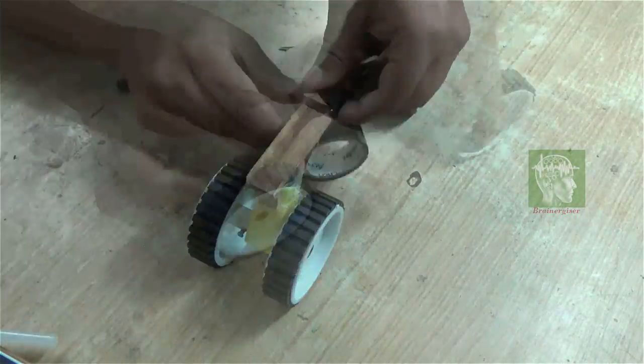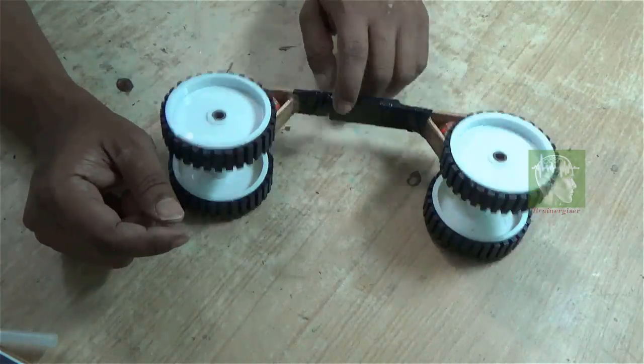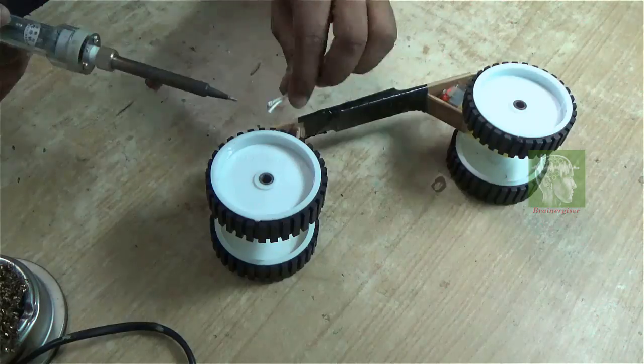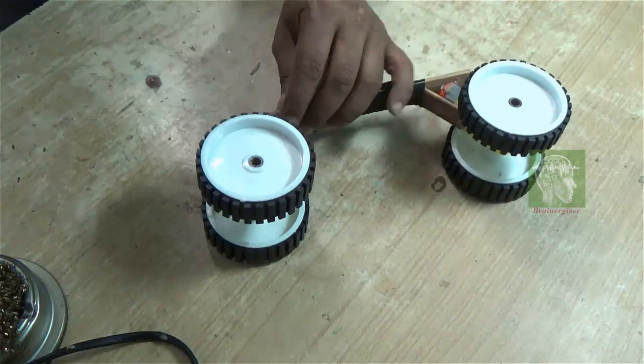Use some black tape to reinforce the structure. Now solder this kind of wires on the motor. Two wires per motor.